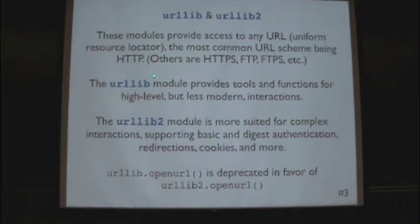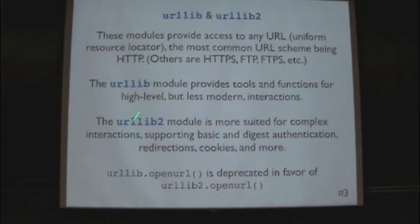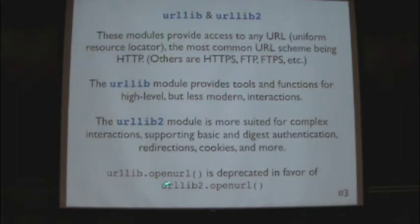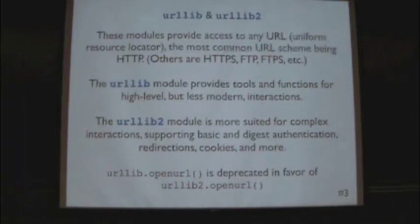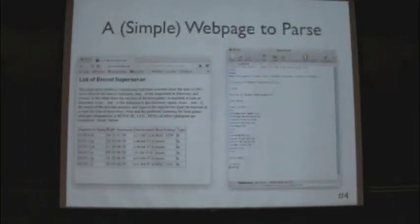Connecting to the internet — the two modules that are very commonly used for this are called URLlib and URLlib2. Both of them provide access to any uniform resource locator. URLlib is more or less deprecated at this point. Unless you're doing very specialized things, you'll really be working with URLlib2. OpenURL is a sort of very simple command — you'll feed it as an argument the URL page you want to grab, and it will retrieve that information assuming you're connected to the internet.